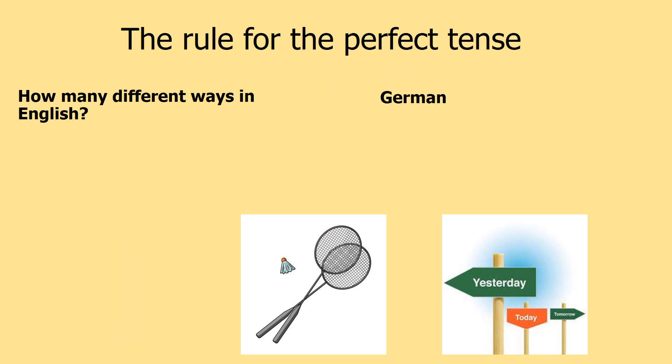The first thing I'm going to do is look at the rule for the perfect tense by comparing how to use the past tense in English and in German. We're going to look at the form most similar to German so that we can build the perfect tense easier. So what I want you to think about is how many different ways we have to say that we played badminton yesterday.